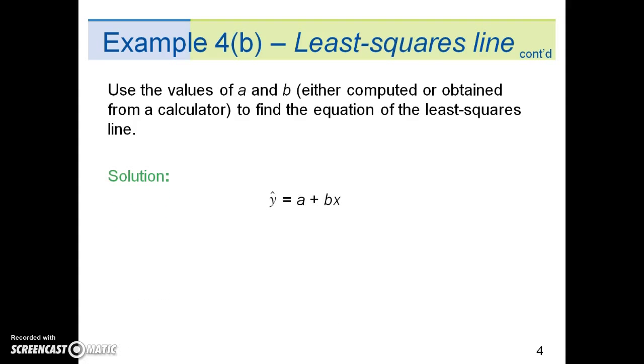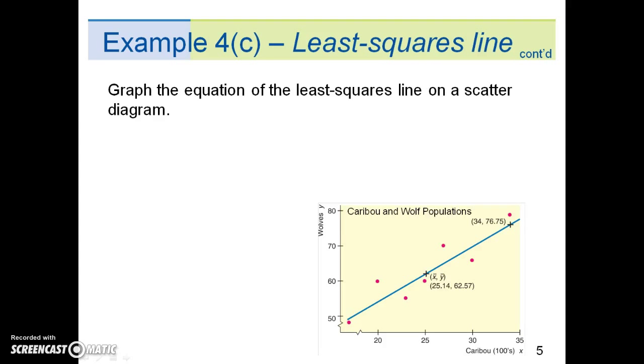Our solution: y-hat equals a plus bx. We plug in the values 22.35 for a, which we calculated on the previous page, and 1.6 for b, and we have our least-squared line.